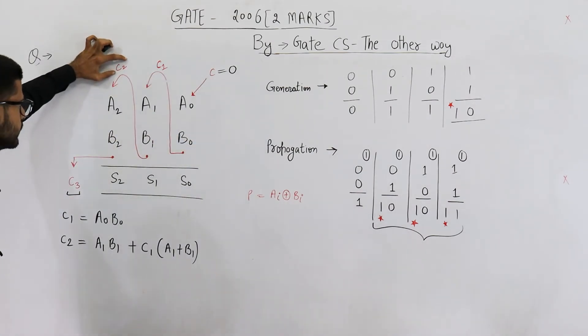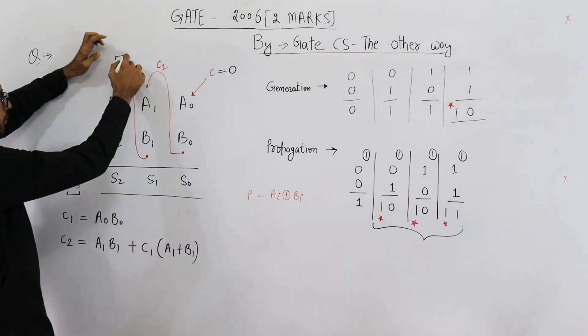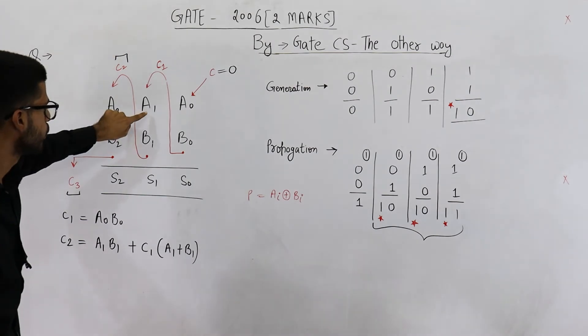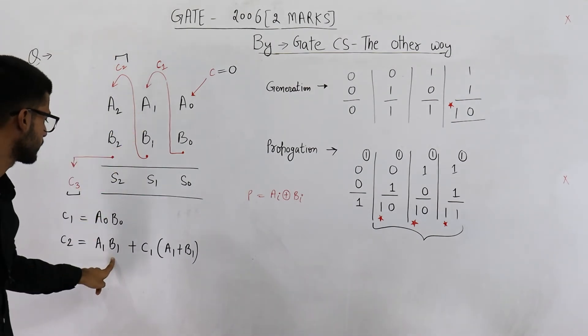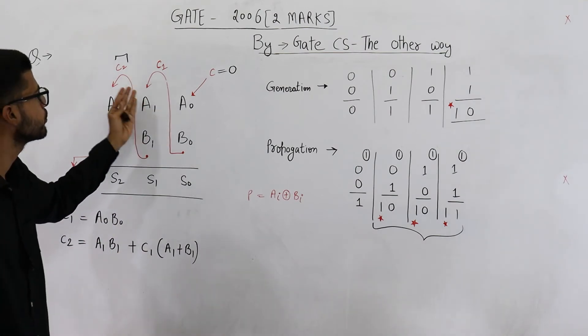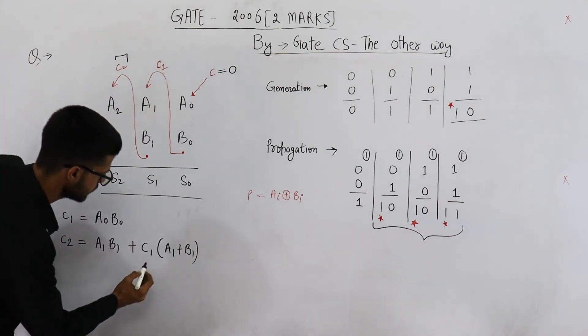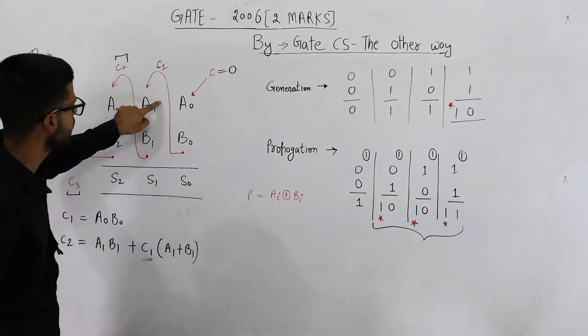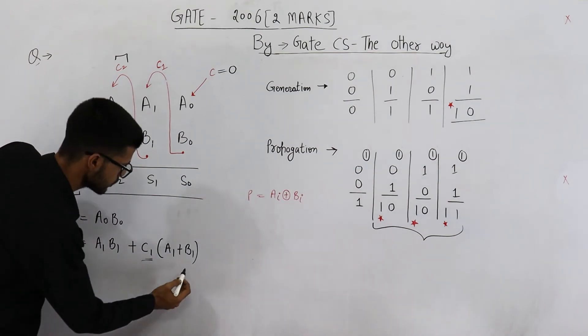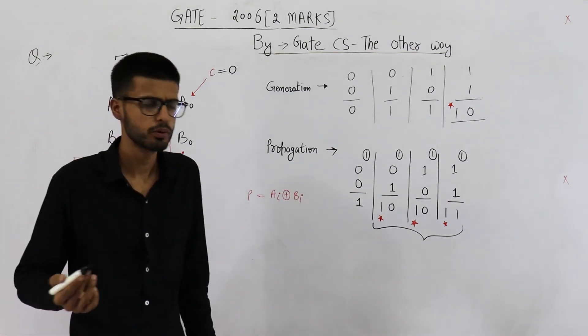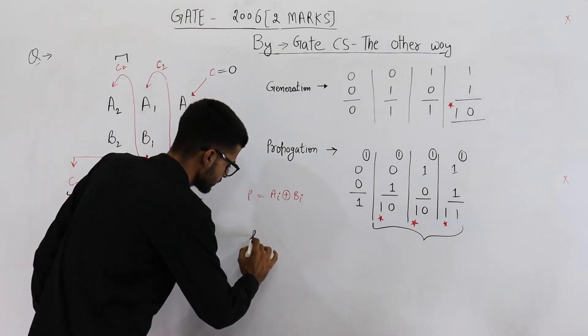Let me explain this equation. C2, that means this carry. I am talking about this. We will get C2 equal to 1 when these two are high, that means a carry is generated or a carry from previous stage is propagated. That means C1 is high. So C1 and any one of these is high. So A1 plus B1.